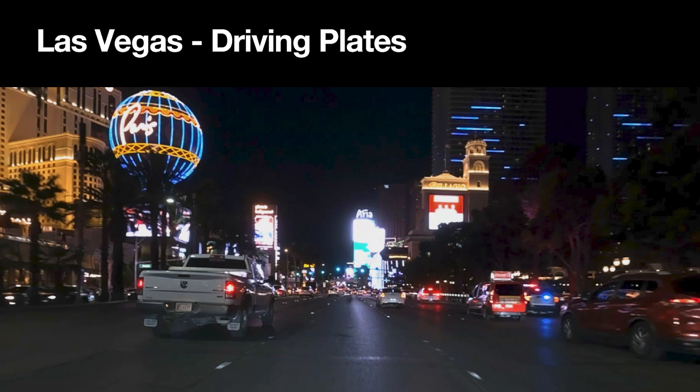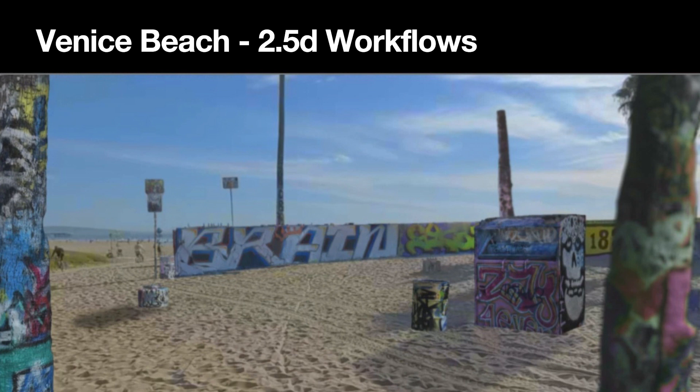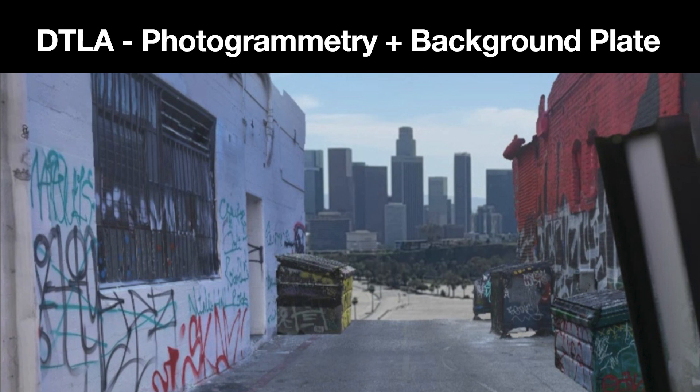Over at the B&H booth we have some plates we shot here in Las Vegas on Tuesday — you can come by and check out those being driven with image-based lighting. We also have 2.5D examples where we bring photogrammetry directly into Live Effects without Unreal. You can just do video plates, bring in photogrammetry, and have a 3D scene you can walk forward and back in. There's another example of photogrammetry with a 2D element and a 2D video plate in the background.